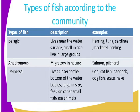When we talk about the pelagic fish, these fish live near the water surface. Their body is small in size and they live in large groups. Examples of pelagic fish include the herrings, tuna, sardines, mackerel, and bristles.